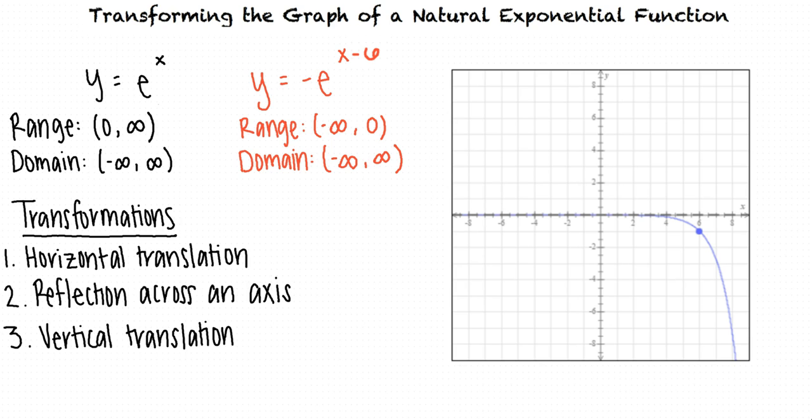So when transforming the graph of a natural exponential function, we need to pay attention to constants being added or subtracted to the function in some way, as well as check to see if anything is negated. These operations will correspond to possible horizontal and vertical translations, as well as reflections across the x or y-axis. That's exactly right. Great work!